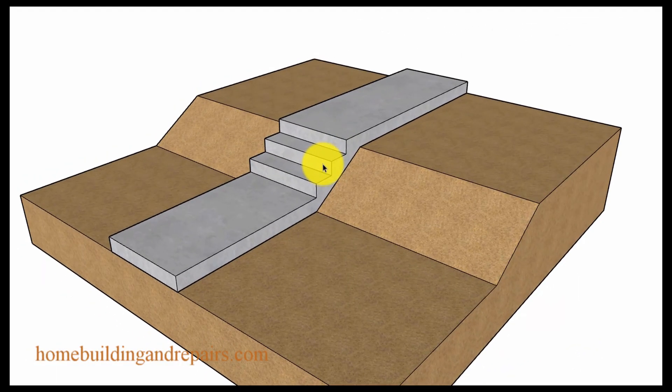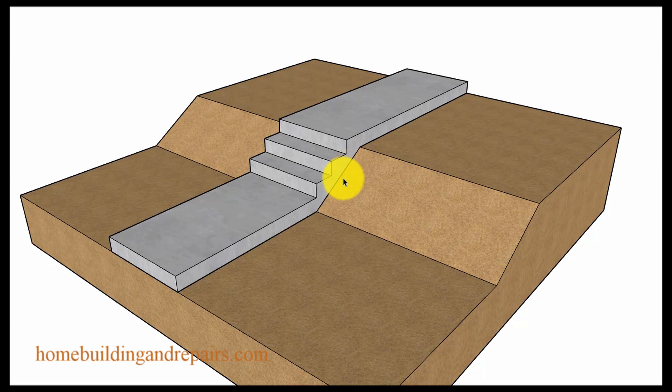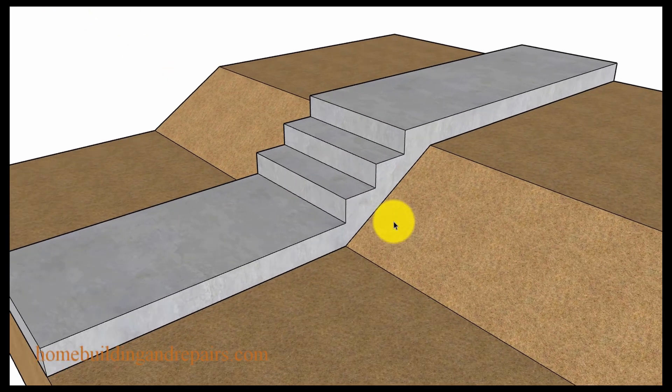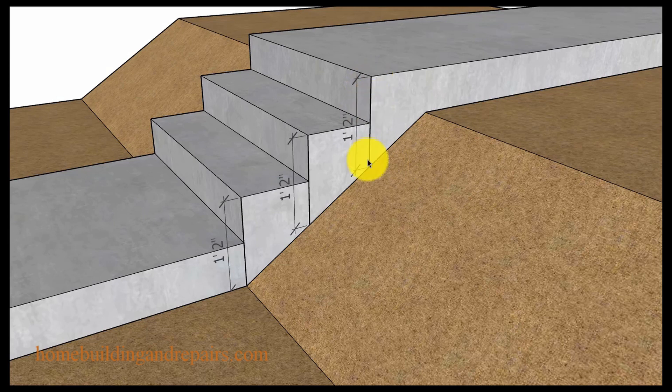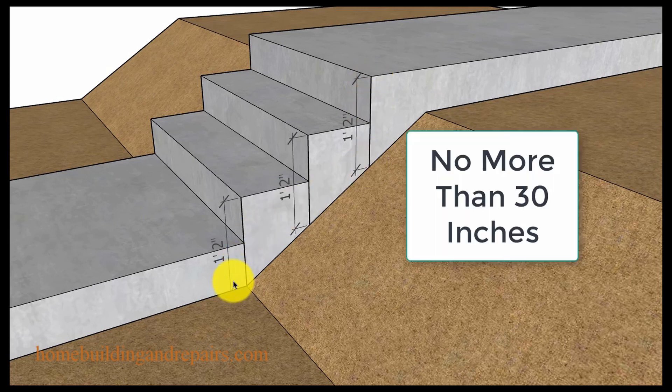The interpretation I was familiar with was that you just simply measure down to the lowest spot from any point of the stairway, and if it was 30 inches or more then it required a guardrail. In a situation like this you're not going to have a problem because if you measure from the highest point on any part of the stairway to the lowest point in the soil, it's not going to be 30 inches.